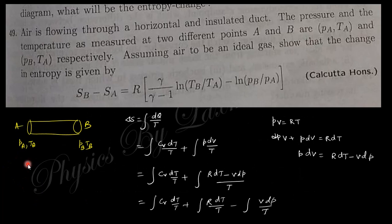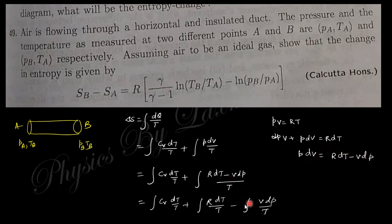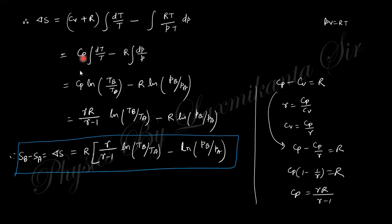Next question: air flows through a horizontal insulated duct with pressure and temperature measured at two points A and B. Assuming air is an ideal gas, find the change in entropy. Using dS = dQ/T and dQ = Cv dT + P dV, and substituting P dV = R dT − V dP, we get dS = Cp dT/T − R dP/P. Integrating gives ΔS = Cp ln(T_B/T_A) − R ln(P_B/P_A), which can be written with R as a common factor.